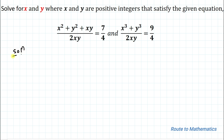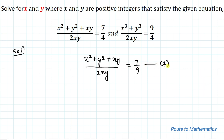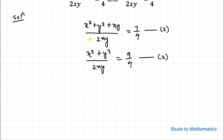Without any delay, let's start the solution. Our first equation is (x² + y² + xy) / (2xy) = 7/4, and our second equation is (x³ + y³) / (2xy) = 9/4.